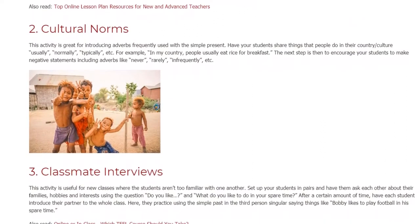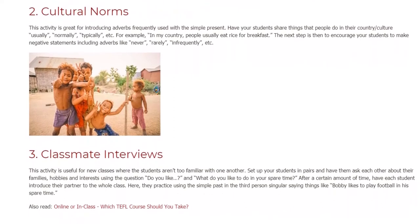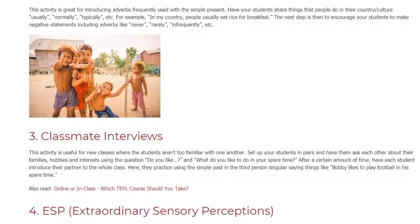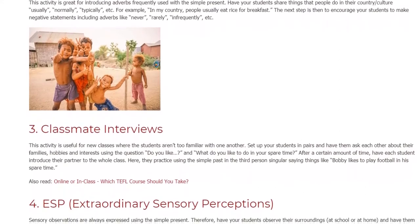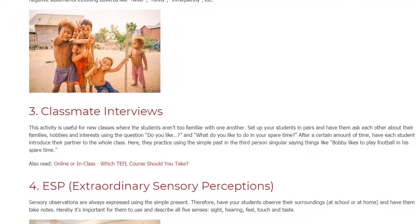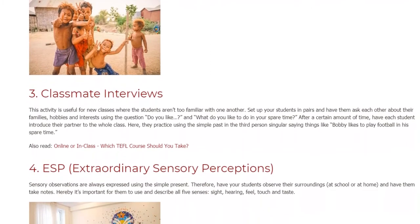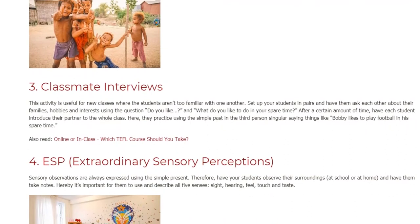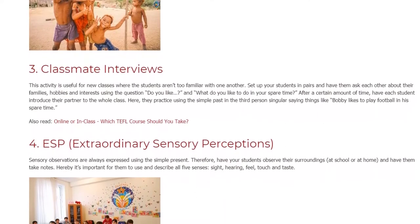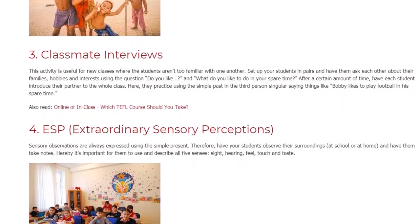Activity 3: Classmate Interviews. This activity is useful for new classes where the students aren't too familiar with one another. Set up your students in pairs and have them ask each other about their families, hobbies, and interests using questions like 'Do you like...?' and 'What do you like to do in your spare time?' After a certain amount of time, have each student introduce their partner to the whole class, practicing the third-person singular — for example, 'Bobby likes to play football in his spare time.'